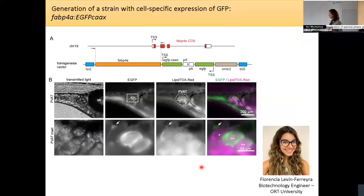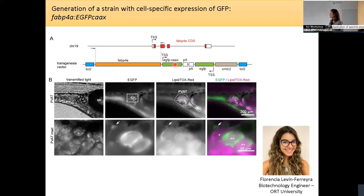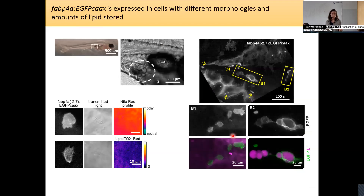This is where Florencia Levin started working with us. During her degree she cloned several promoters from genes expressed in adipose tissue. Here I show the one that finally worked: we are now working with a fish line that has the promoter from a lipid transporter expressed in adipocytes, directing expression of a membrane GFP. Here we see larvae stained with lipophilic dyes in magenta, and in green the GFP label surrounding mature adipocytes within the larva.